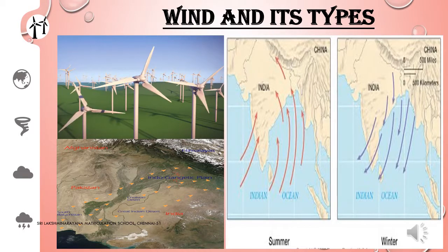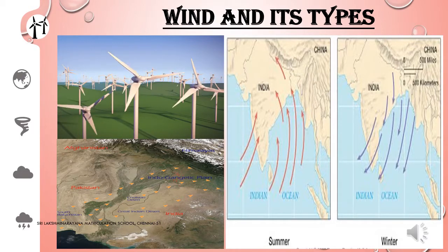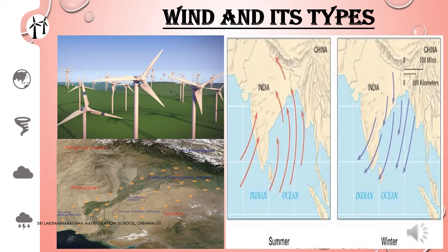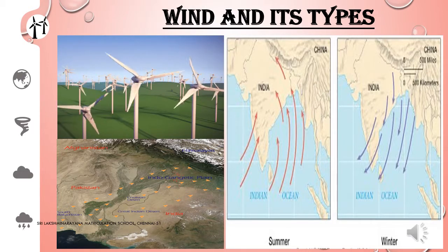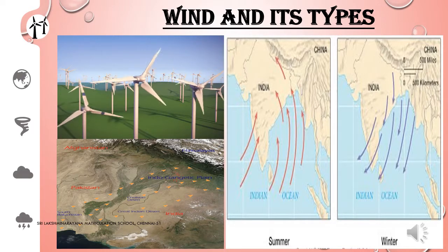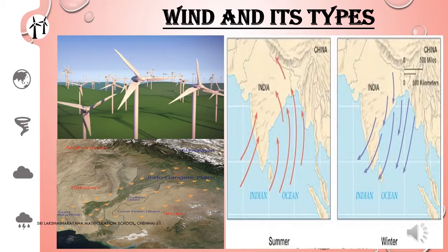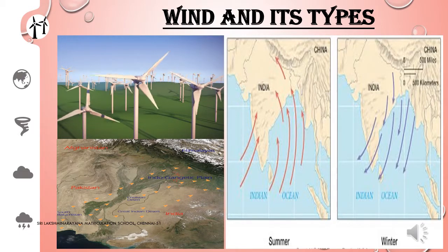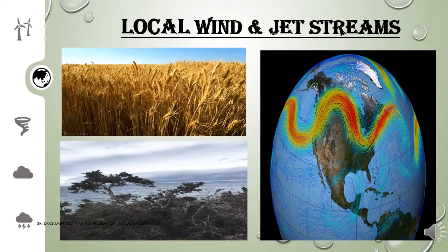Third, Monsoon winds. Monsoon wind is the seasonal wind. There are two types of monsoon wind: southwest monsoon wind and northeast monsoon wind. Generally, southwest monsoon wind blows in the month of June to September, whereas northeast monsoon winds blow in the month of October and November.